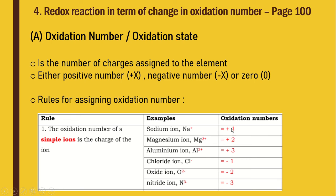Be careful — you must write the oxidation number with the sign first and then the number. For example, write +2, not 2+. If asked for the oxidation number of magnesium ion, writing 2+ will be wrong. Read the question carefully to know whether it asks for oxidation number or charge number. For aluminium ion Al³⁺, the oxidation number is +3.